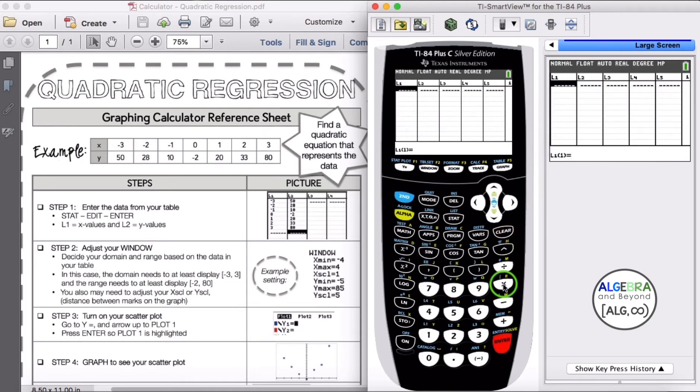Okay, so now both columns are empty and I can enter in my data. For L1, I'll enter my X values: negative 3, enter, negative 2, negative 1, 0, 1, 2, and 3.